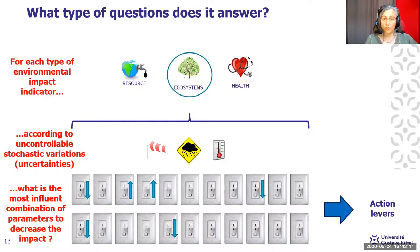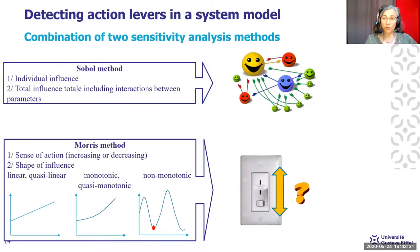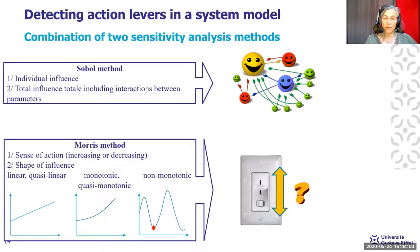The results tell you which parameters are influential and whether they should go up or down — those are the action-levers. Parameters found not influential on a given indicator are not action-levers. To do this, we combine two sensitivity analysis methods: the Sobol method, which quantifies the influence of each parameter individually and in interaction with others, and the Morris method, which gives the sense of action of a parameter and information about the shape of its influence. Some parameters act in a non-monotonic manner, and this is interesting because you can find optima.